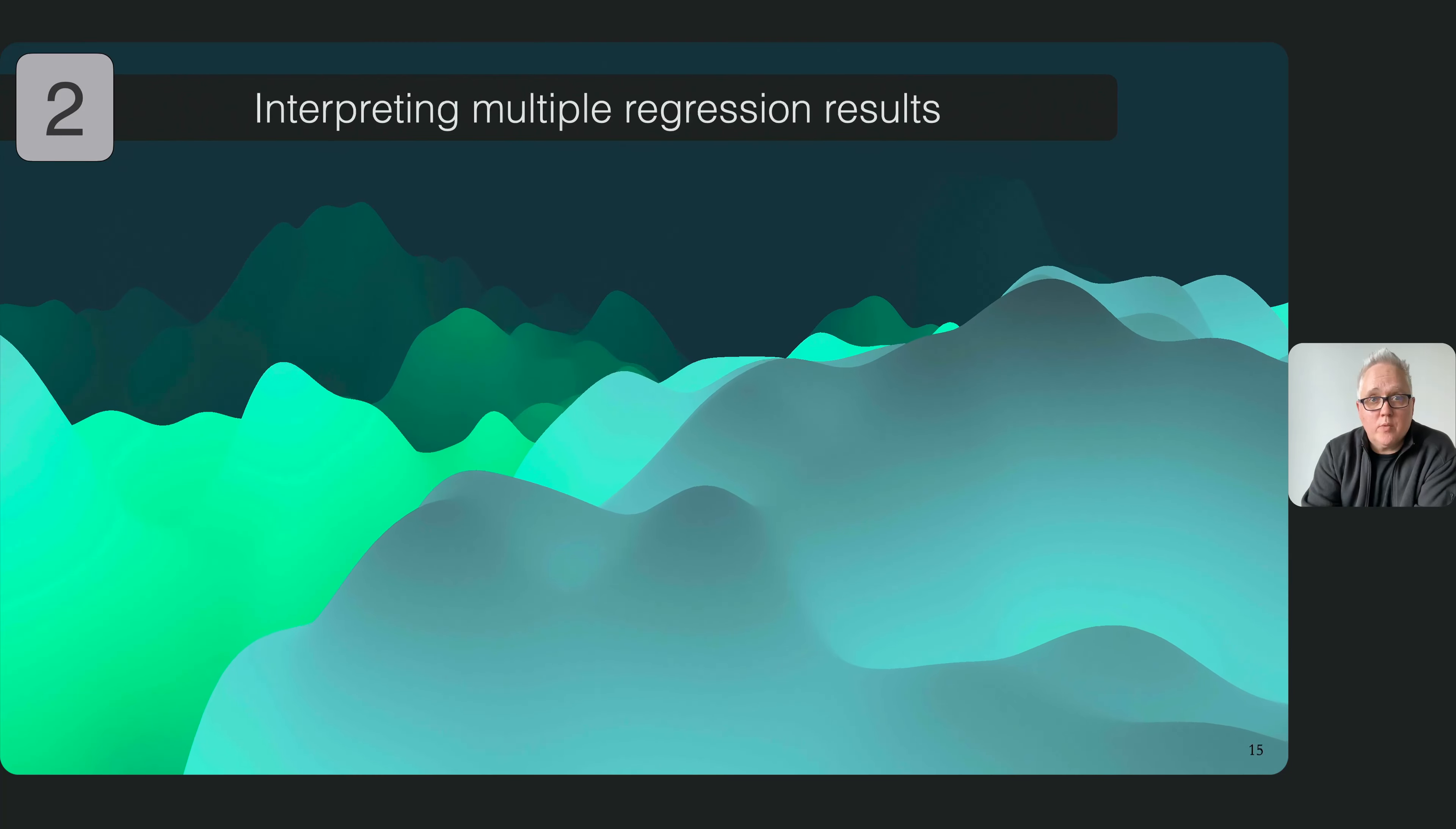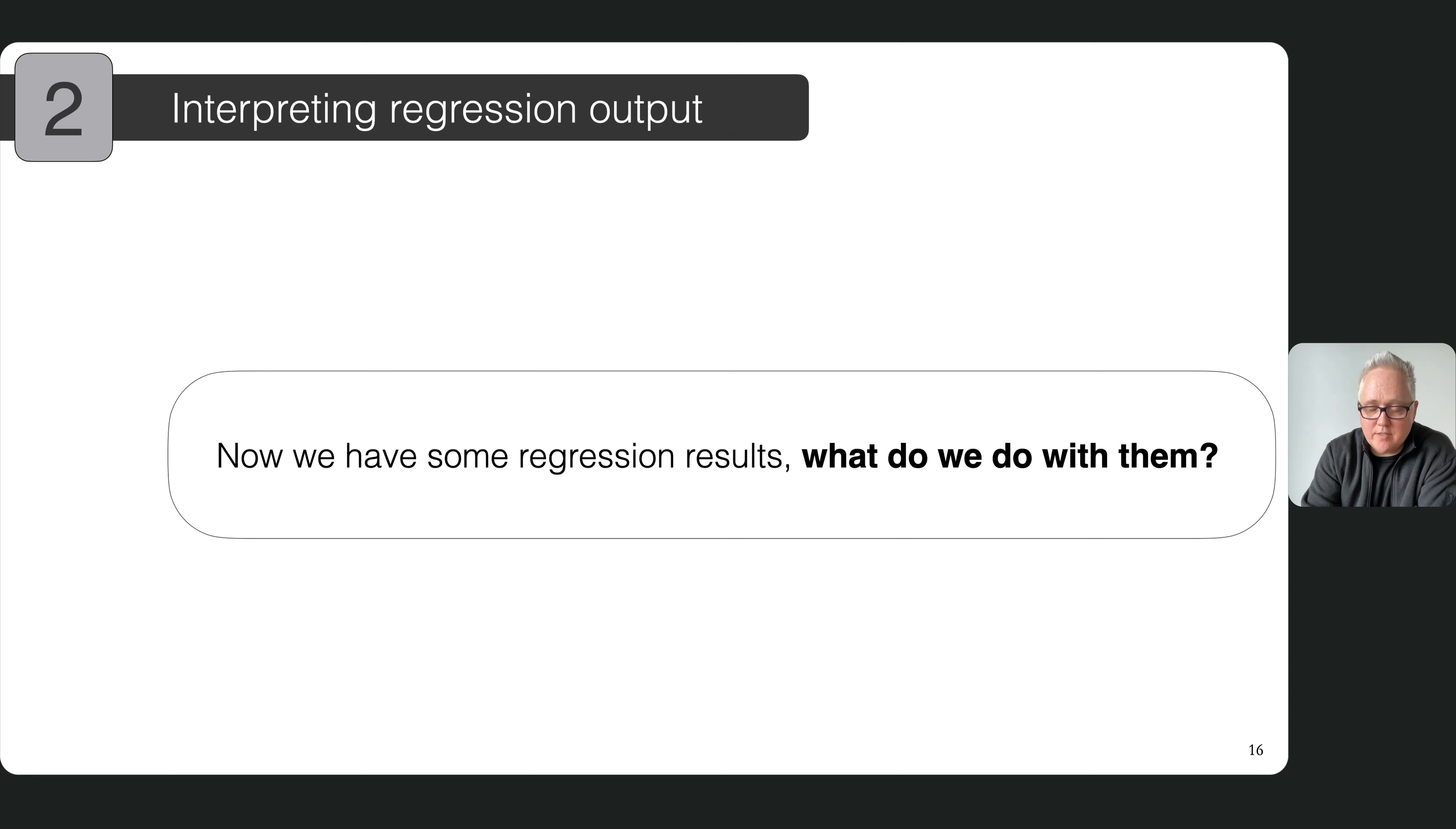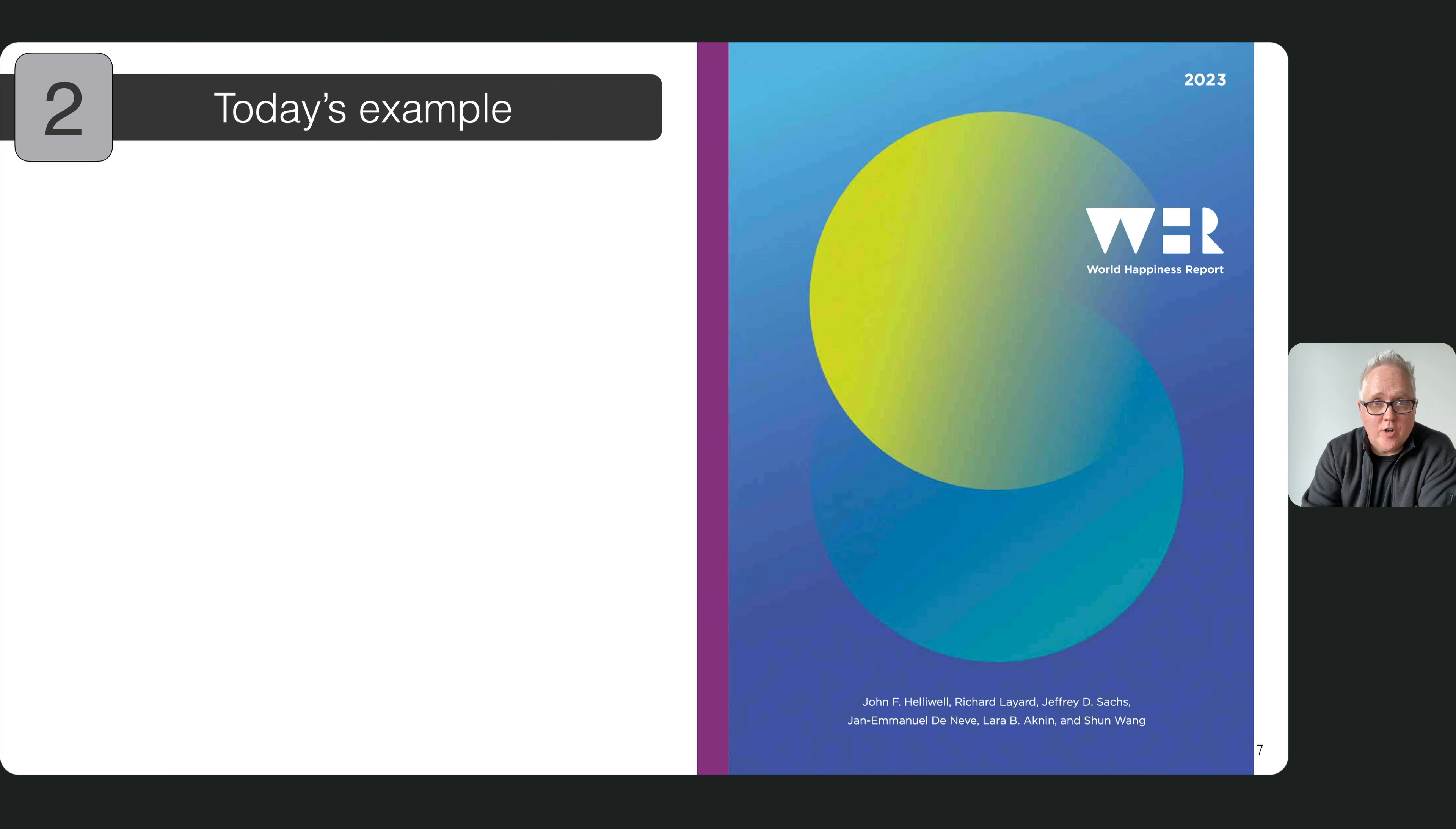So how do we interpret the results of our multiple regression now that we're actually able to run it? What are we going to focus on and what are we going to conclude given our results? I've found it most useful to actually use real regression results rather than just focusing on the equations. So I'm using the same data set that I've used in previous weeks, the World Happiness Report from 2023.